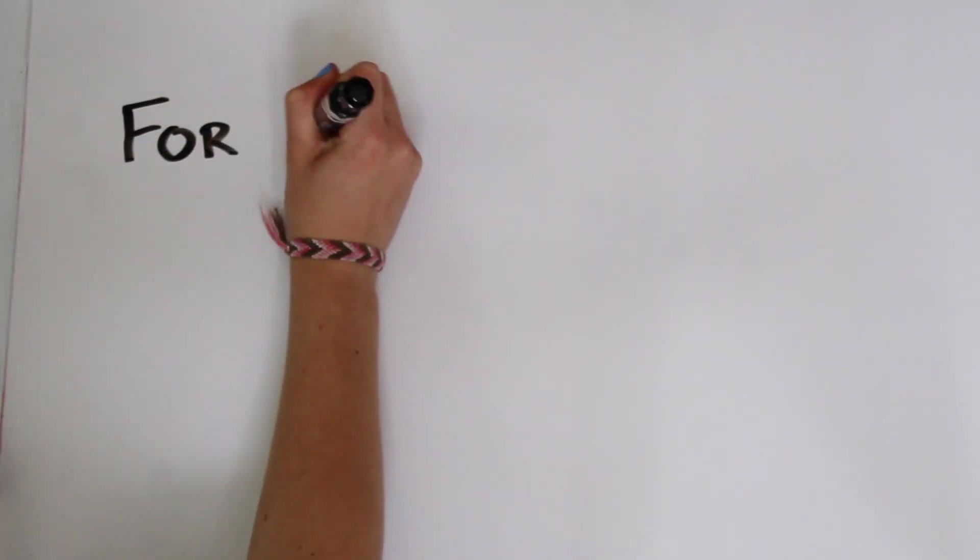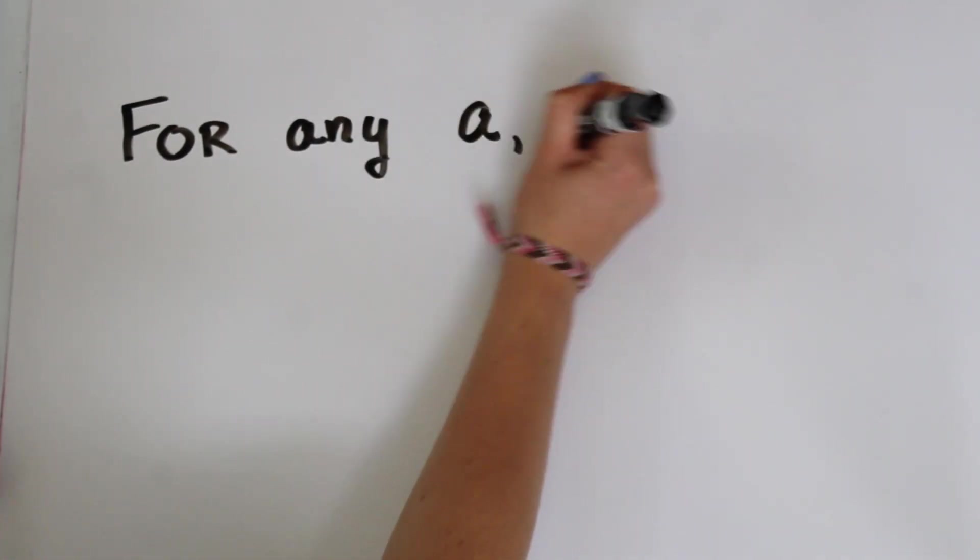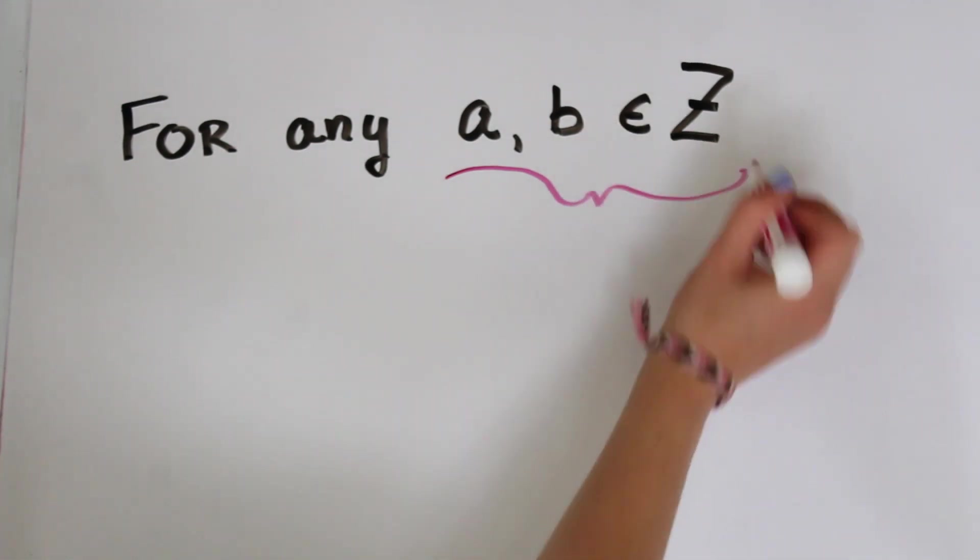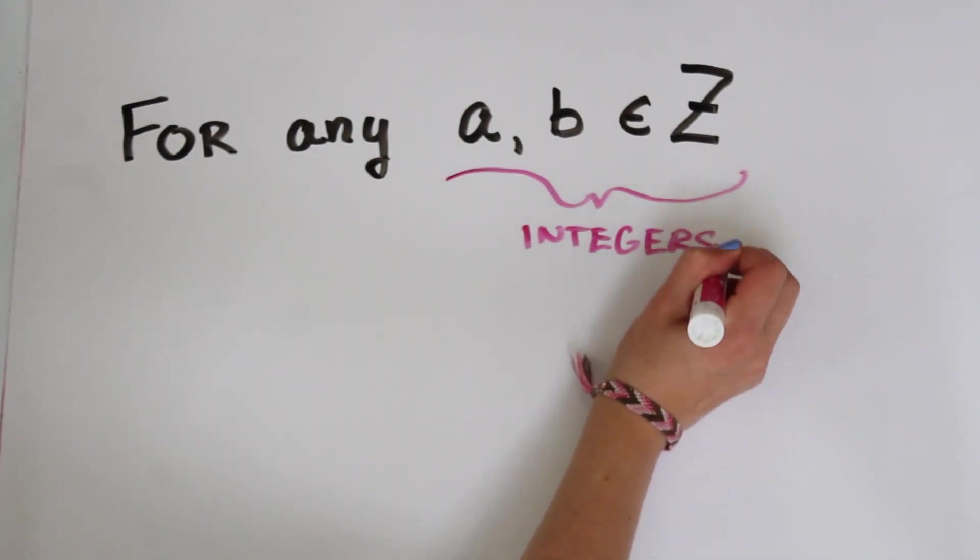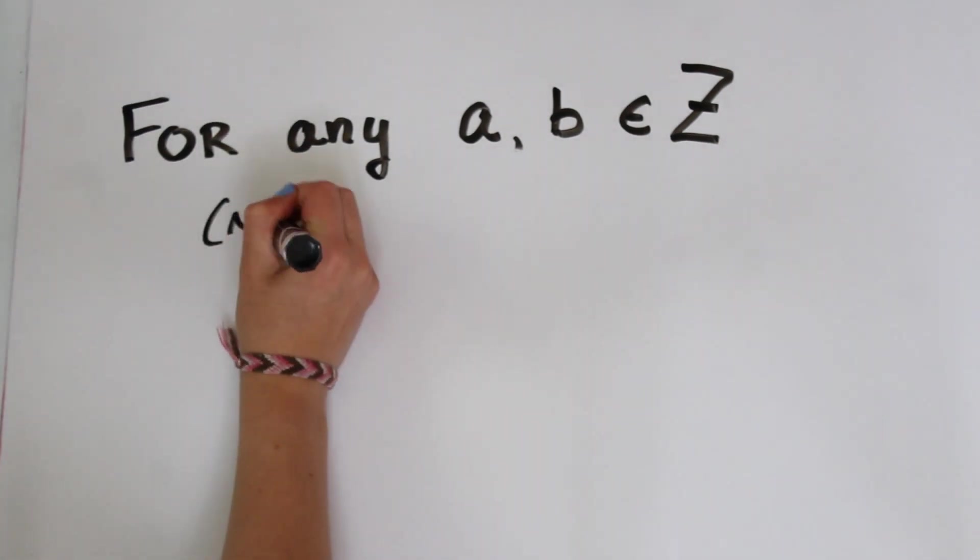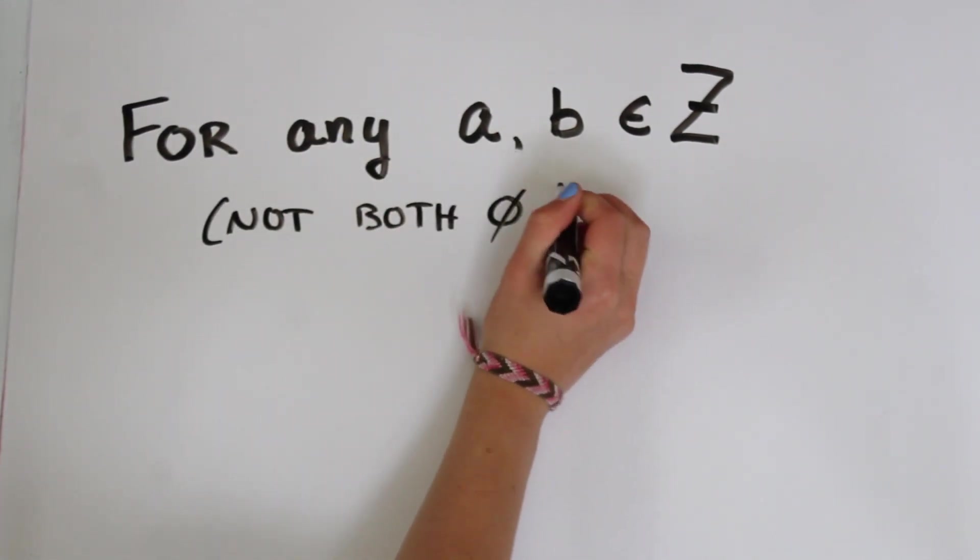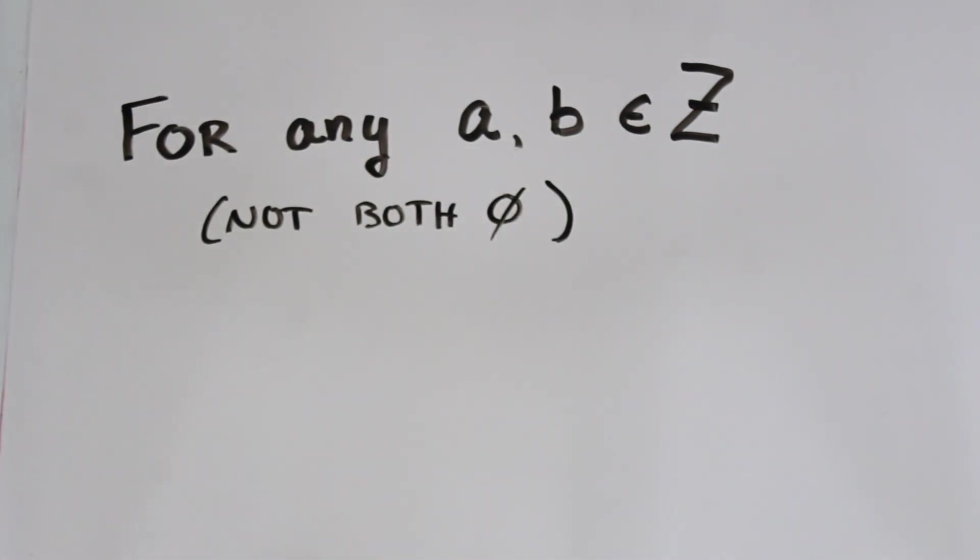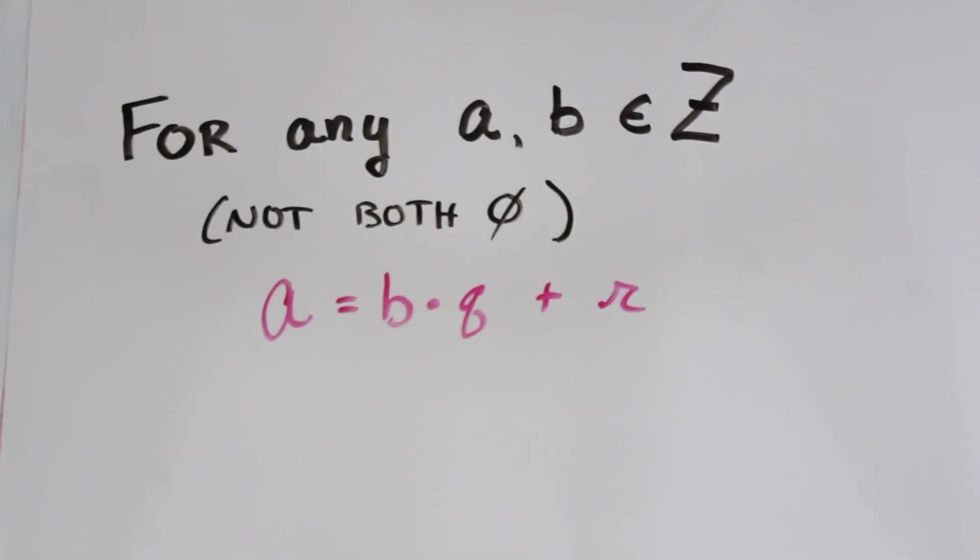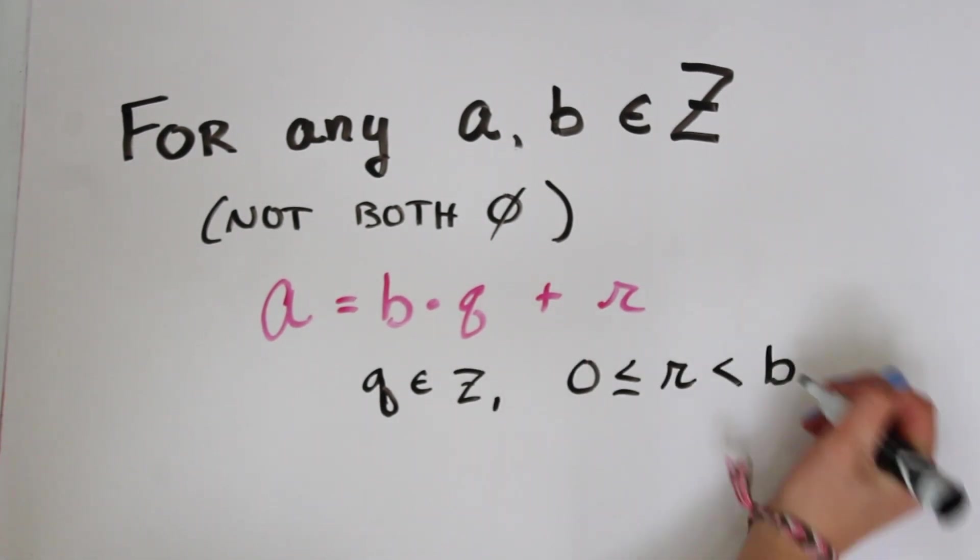So if I gave you any two integers, let's just say A and B, here I'm writing A comma B element of Z. That's just some fancy math notation. So any two integers A and B, where both of them are not zero, I can always write A = BQ + R, where Q is another integer and R is a remainder.